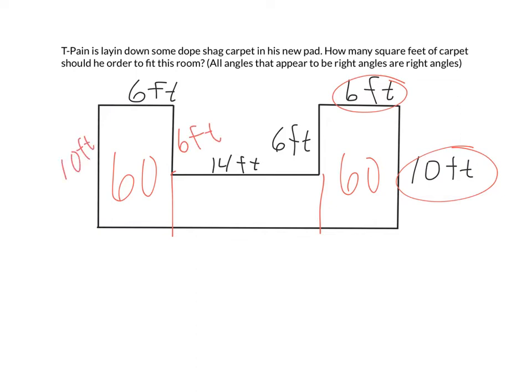So we've got two 60s, and now I've got to figure out what the other section is. What's the length of those red lines that I just drew? Well, I've got 6 feet, and what will make up my total of 10 feet? 6 feet plus 4 feet makes 10 feet, so there's going to be 4 feet left. So 4 times 14 — that's going to get me 56. So that middle section is 56 square feet.